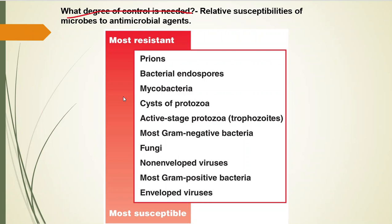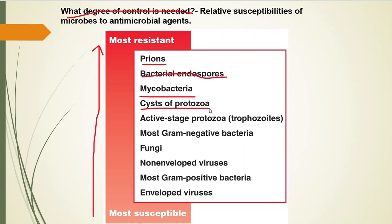What degree of control is needed? This is a scale going from the most resistant to the least resistant microbes. The most resistant are prions, followed by bacterial endospores, which are hard to kill. Then mycobacteria — the guys from tuberculosis. Protozoan cysts are very much like endospores, enclosed in a thick impermeable wall. Gram-negative bacteria can be a nightmare — we just don't have as many things for these guys.